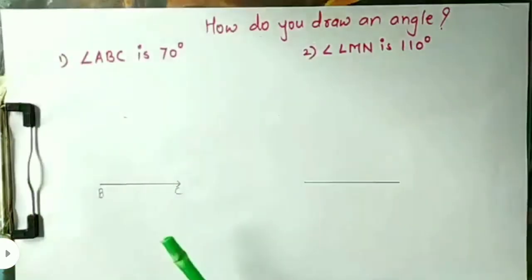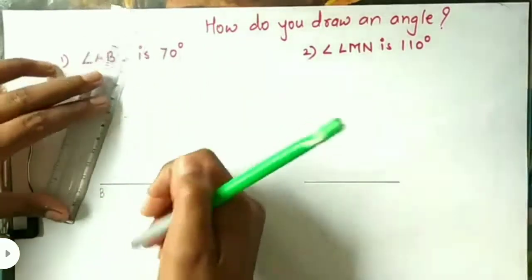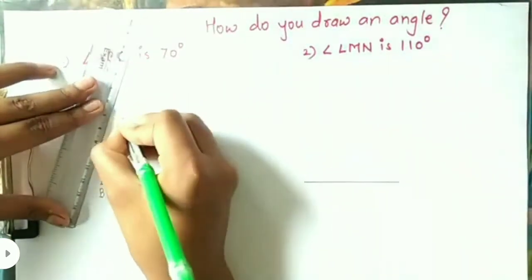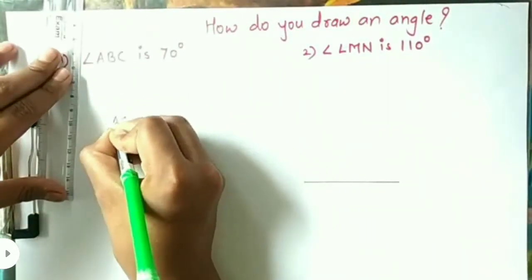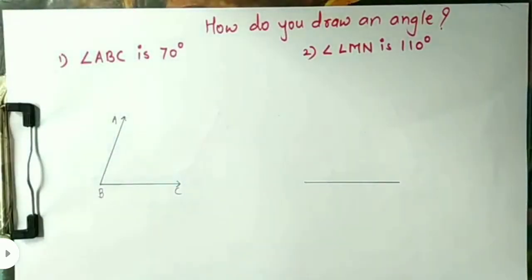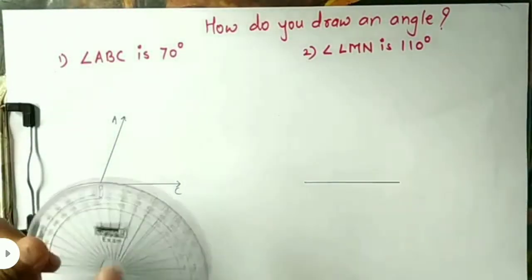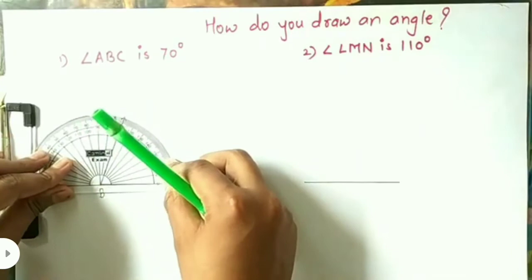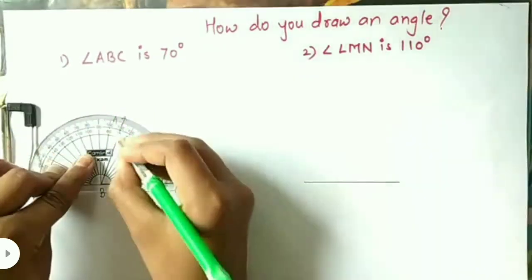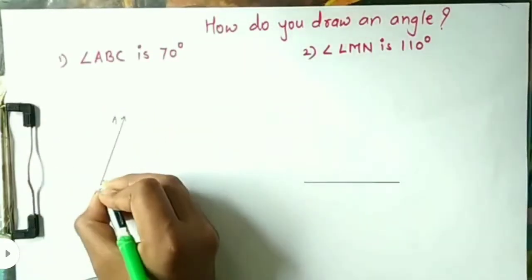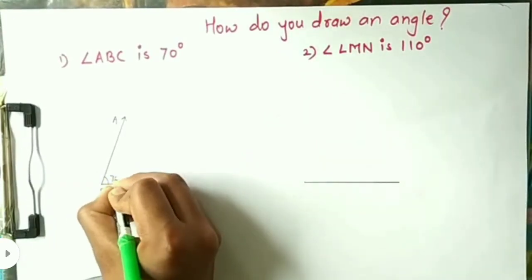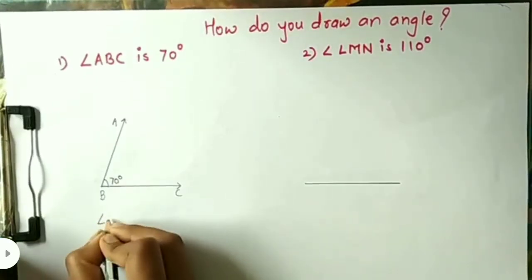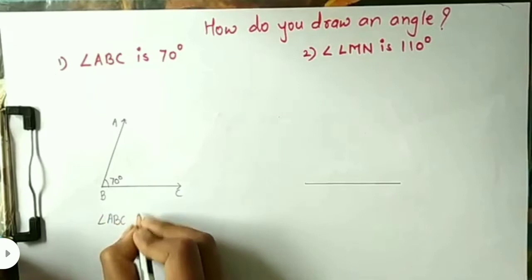Lift the protractor. Draw a line from vertex B through the point marking the 70 degree angle. Name the other end of the line A. Again, see once again. Write the angle name. Angle ABC is an angle of measure 70 degrees.